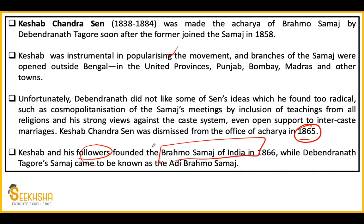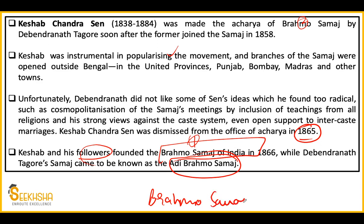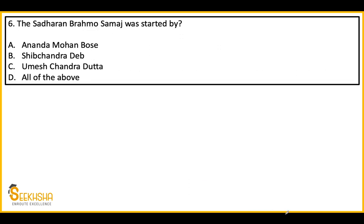Ultimately Keshav Chandra Sen was expelled from Brahmo Samaj in 1865. After being expelled, Keshav Chandra Sen and his followers formed a new organization called Brahmo Samaj of India. Once Brahmo Samaj of India was formed, there was confusion between the two names. So Debendranath Tagore's original Brahmo Samaj — founded by Raja Ram Mohan Roy — came to be known as Adi Brahmo Samaj. So the original Brahmo Samaj bifurcated into two branches: Brahmo Samaj of India and Adi Brahmo Samaj.